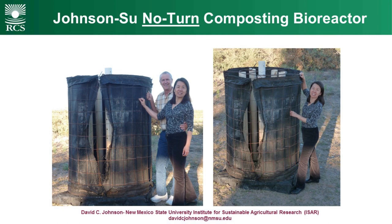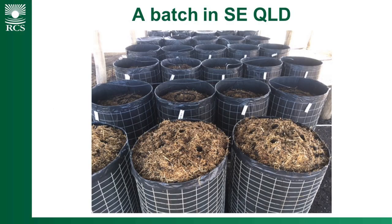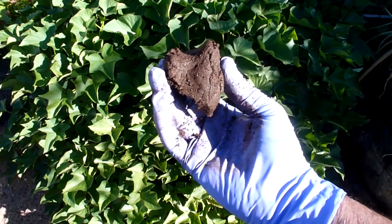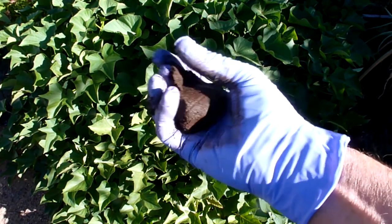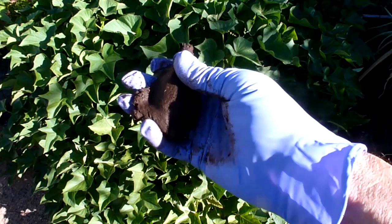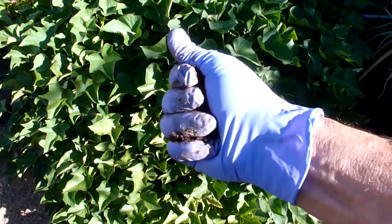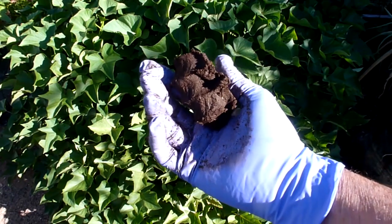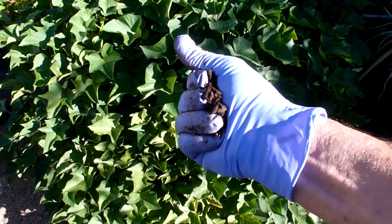He developed this composter called the Johnson-Su Composter. At the end of this session I'll give you a way of accessing how to build one. There's a bloke in southeast Queensland who heard about them late last year and went home and built 24, which is enough to do about 10,000 hectares, and he's only got 1,500 hectares. When the compost comes out the bottom of this, it actually comes out like a clay or a putty. The reason he's got gloves on is that it's biology — there's no nutrients left there; that is all biology.